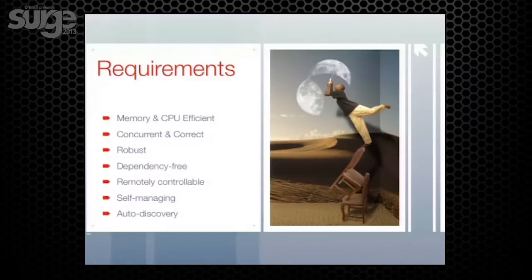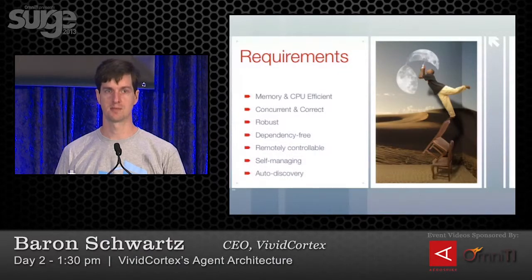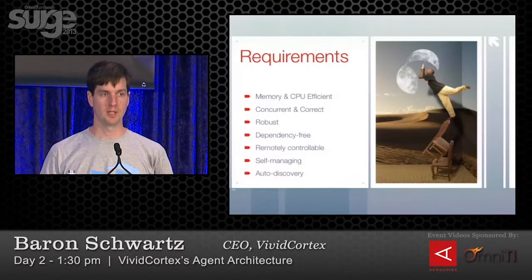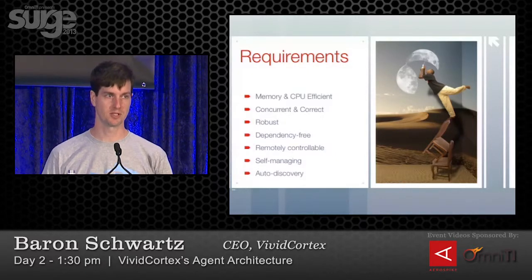Some requirements for our agents: they need to be memory and CPU efficient because we're doing difficult computer science things — not just grabbing stats off the proc file system. There's real computation, and we need minimal impact. We need to do a lot of things concurrently and do that correctly. It needs to be robust and resilient against all kinds of errors, including ones we can't foresee. It needs to be dependency-free, and we need to be able to control our agents remotely. Everything in your environment is then auto-discovered.